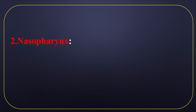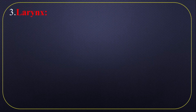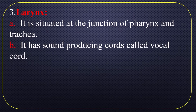Nasopharynx. It is a short portion between the nasal cavity and larynx. The air enters the trachea through the nasopharynx. Larynx is situated at the junction of pharynx and trachea. It is the short portion between pharynx and trachea. It has sound-producing cords called vocal cords, which help us to talk clearly.